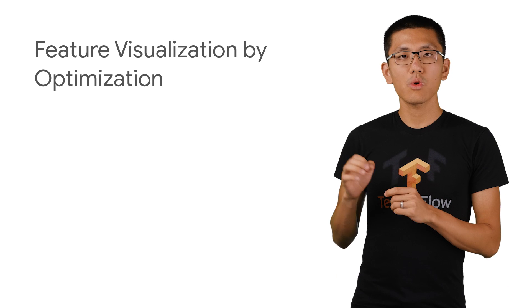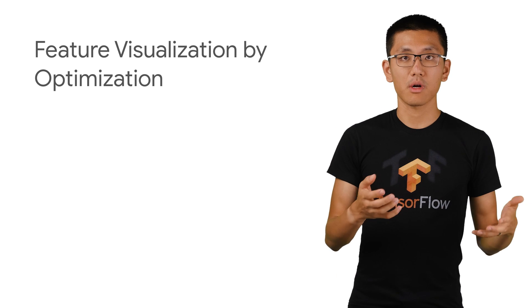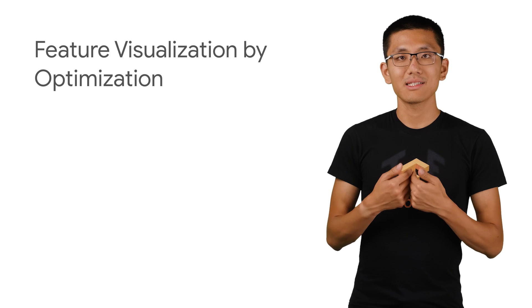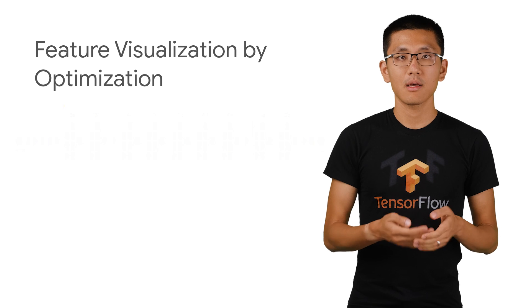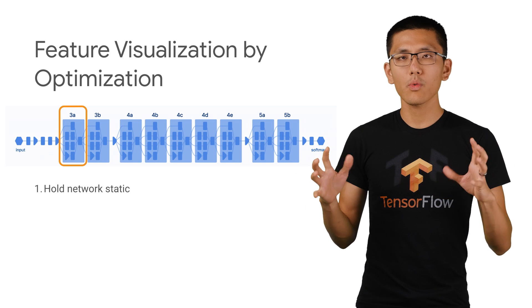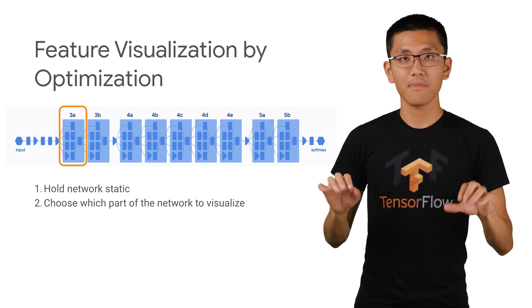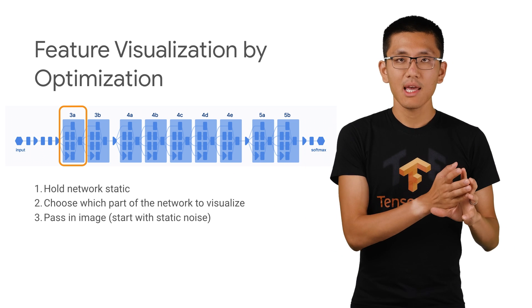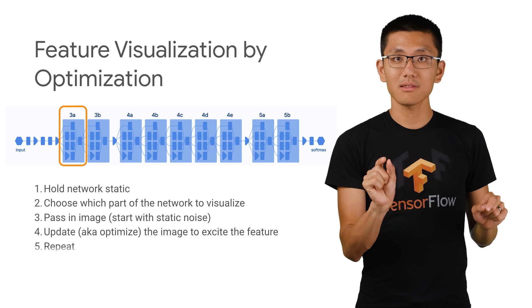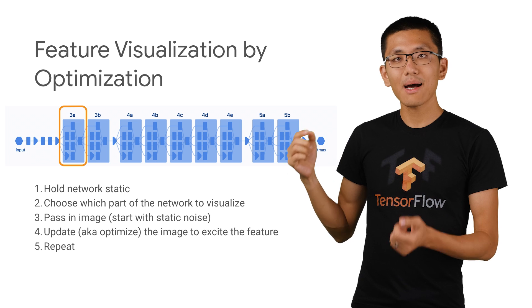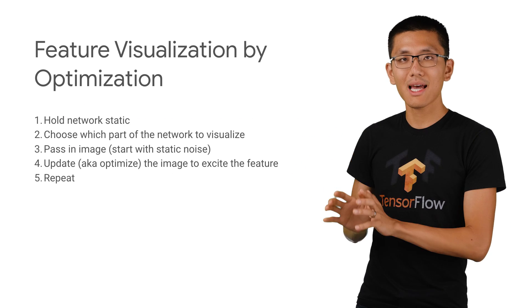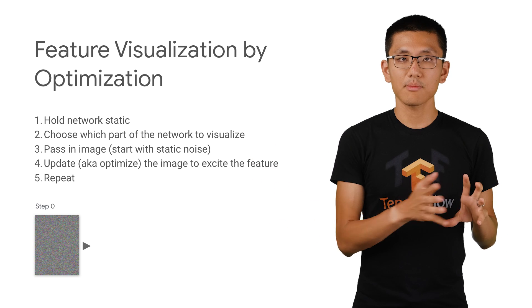So let's start by seeing what a specific neuron in our network responds most strongly to, by looking at how it activates when the network is presented with an image input. If we take this trained model and hold all the weights static so they can't change, and then run an image through that network and measure what a particular neuron's activation value is, we can begin to optimize this input. Initially we'll start with an image of pure static noise.